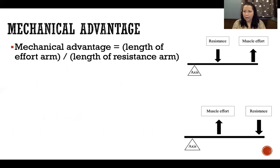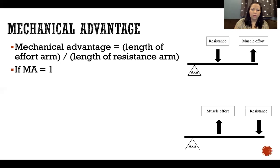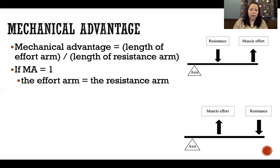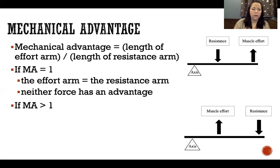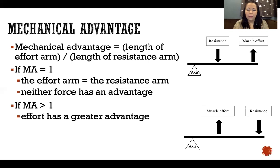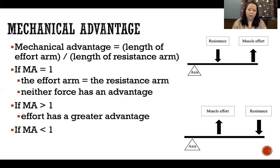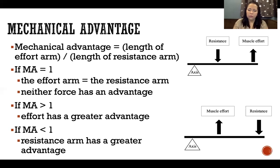Mechanical advantage can be calculated mathematically by dividing the length of the effort arm — the distance from the axis to the muscle effort — by the length of the resistance arm — the distance from the axis to the resistance. If mechanical advantage equals one, the effort arm and resistance arm are equal and neither has the advantage. If it's greater than one, the effort has a greater advantage, meaning the effort arm is longer than the resistance arm. If it's less than one, the resistance arm has the greater advantage.